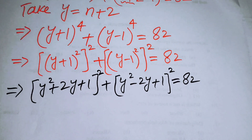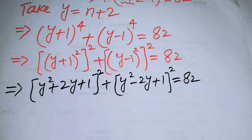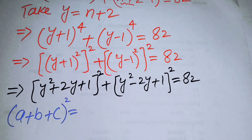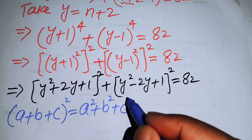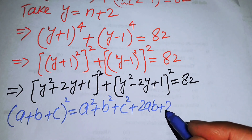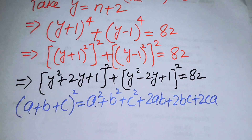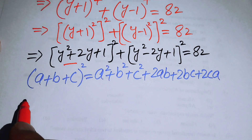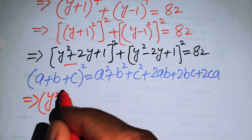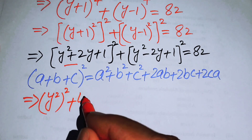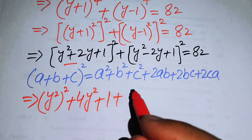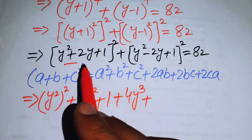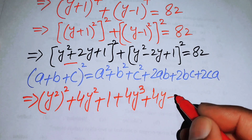We use the identity (a+b+c)² = a² + b² + c² + 2ab + 2bc + 2ca. Applying this to the first term (y²+2y+1)², we get y⁴ + 4y² + 1 + 4y³ + 4y + 2y².